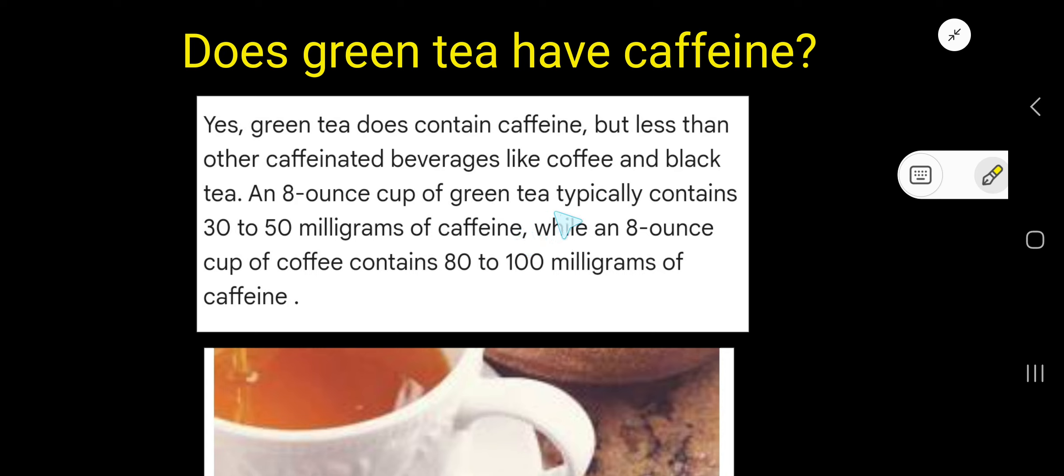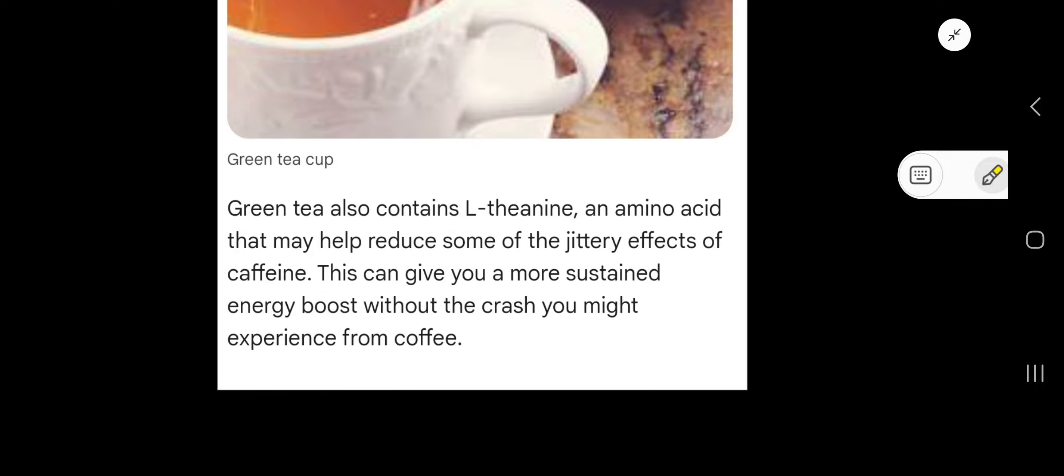An 8-ounce cup of green tea typically contains 30 to 50 milligrams of caffeine. On the other hand, an 8-ounce cup of coffee contains 80 to 100 milligrams of caffeine. Green tea also contains L-theanine, an amino acid.